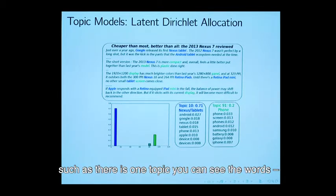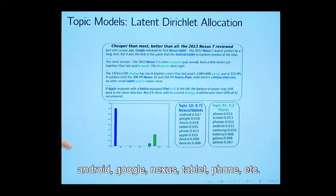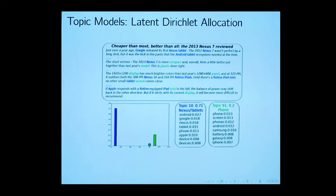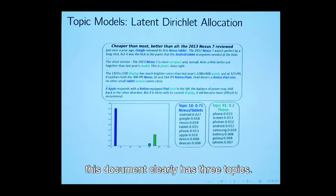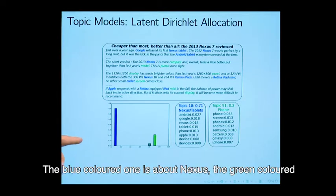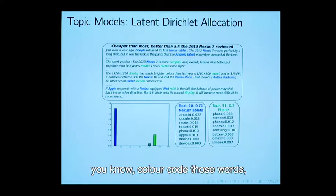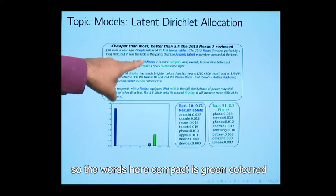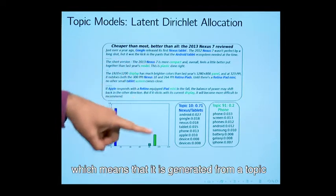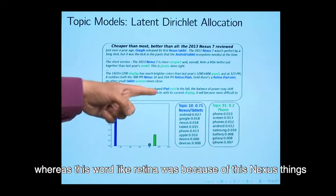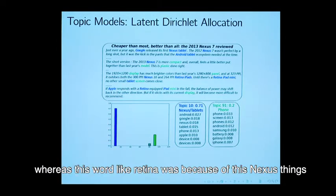Another is about phone. You see this document clearly has three topics. One is the blue colored one is about nexus, the green colored one is this and we are trying to also color code those words. The words here compact is green colored which means that is generated from a topic belonging to that phone topic, whereas this word like retina was because of this nexus things.